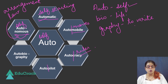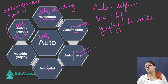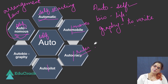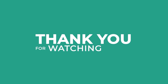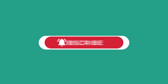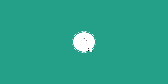So that is how the word auto has been incorporated in the English language, and these are a few words that we have from the root word auto. There are many more words, so you may want to go online and look them up. That is all from my side today. Thank you so much for watching the video. If you found it helpful, like the video and subscribe to our channel. If you have any queries, ask them in the comment section. Press the bell icon to always stay updated. Crack it now with Educrack.